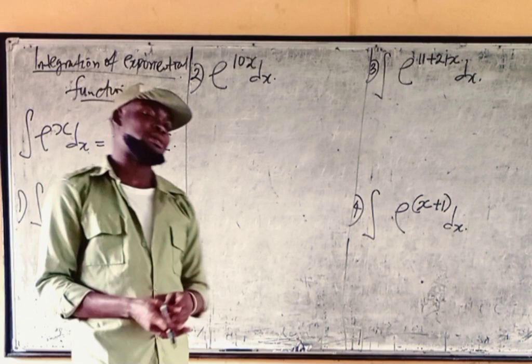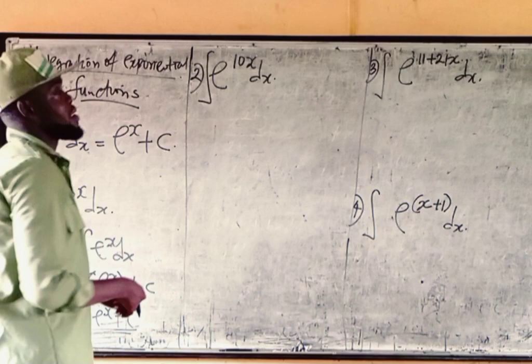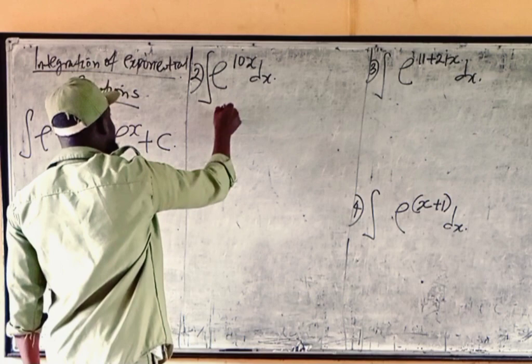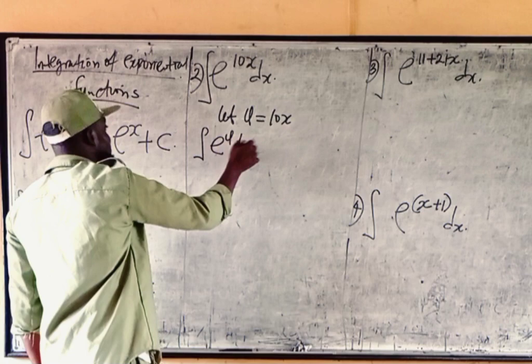Since the power is different from just ordinary x, the first thing we do is to say, this is integrating exponential of something with respect to x. So the first thing we're going to do is let u be equal to the power of the x. In the sense that the question will become integrate exponential u dx.